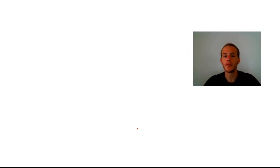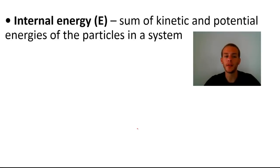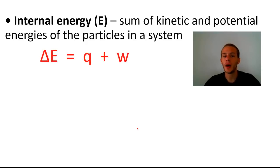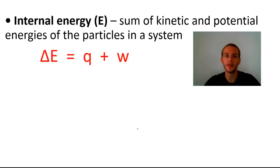In the last video we talked about the first law of thermodynamics, and within that video we defined the term internal energy. Internal energy is the sum of all the kinetic and potential energies of the particles in a system — you can think of it as the total energy content of a system. We also learned about the two ways by which energy can flow between a system and its surroundings. The system is the part of the universe you're looking at, and the surroundings is everything else.